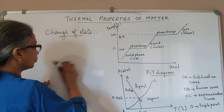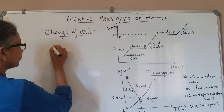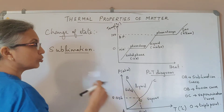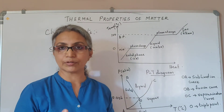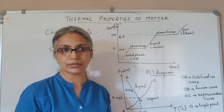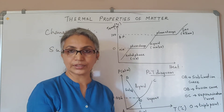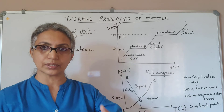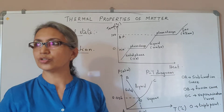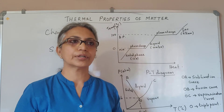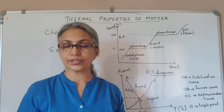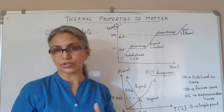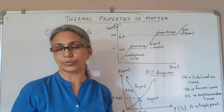We also have what is called sublimation — the process where a substance does not have to go through the liquid phase but can directly convert from the solid state to the vapour state. For example, naphthalene balls can directly convert from solid to vapour without passing through the liquid state. Dry ice (solid carbon dioxide) and iodine are also substances that can undergo sublimation.